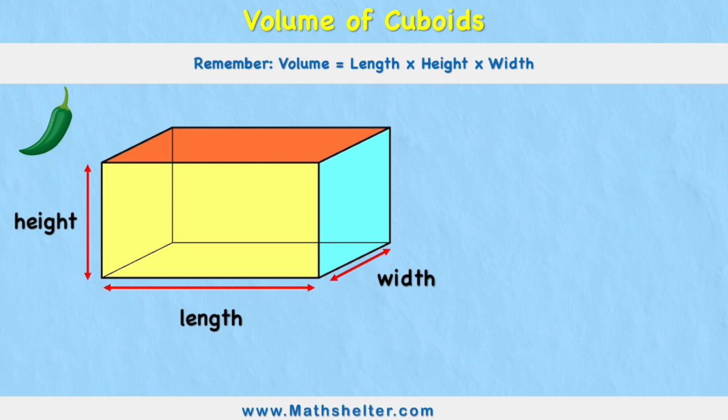Okay, well what do we need to remember today? We need to remember that the volume of a cuboid is equal to the length times the height times the width. So therefore we are just going to multiply the length by the height by the width of the cuboid.